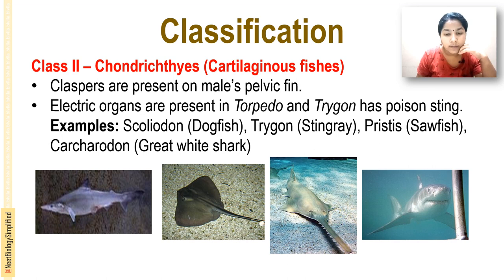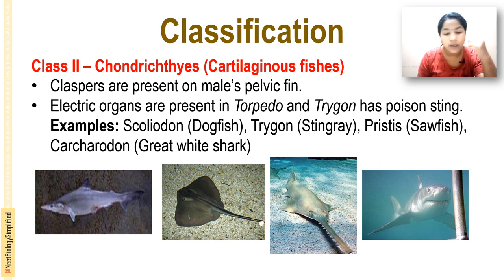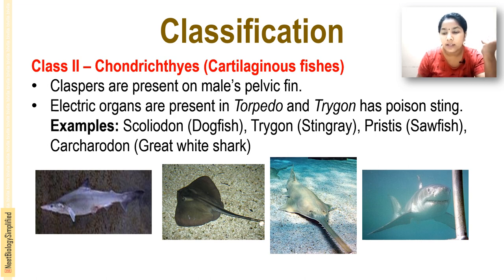Claspers are present on the male pelvic fins. Electric organs are present in Torpedo. Trigon has a poison sting. Examples of Chondrichthyes: Scoliodon (dogfish), Trigon (stingray), Pristis (sawfish), and Carcharodon (great white shark).